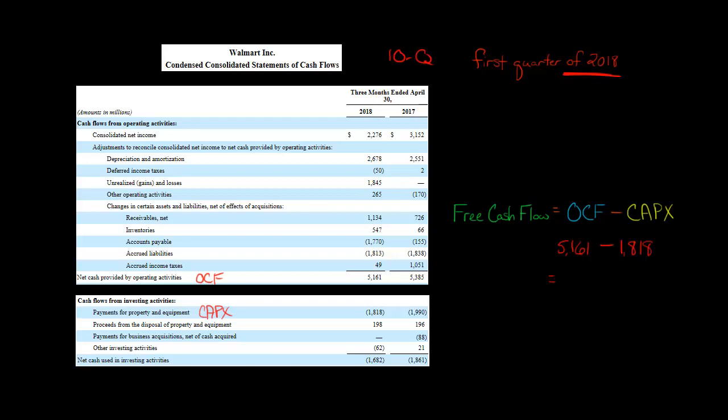So when we calculate that out, we get 3,343. That's just when we subtract these two. And so that means that Walmart's free cash flow for the first quarter of 2018 was $3.343 billion.